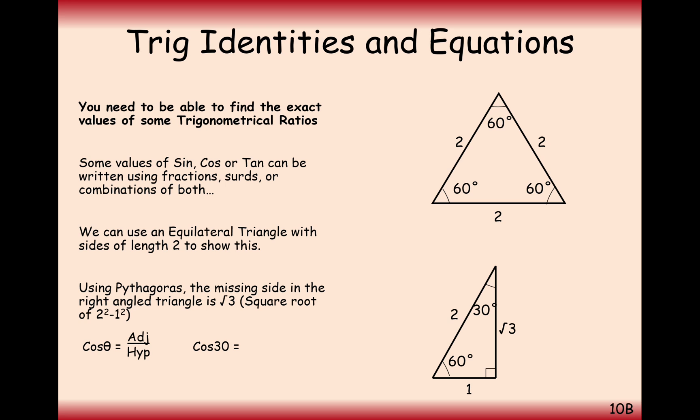For cos, this is going to be adjacent over hypotenuse, so it's going to be for 30, root 3 over hypotenuse, which is 2. So adjacent over hypotenuse, root 3 over 2. And for cos 60, the new adjacent is the 1 down here, so it's going to be 1 over 2. So notice how that's swapped around for the sine and the cos.